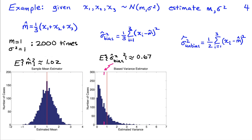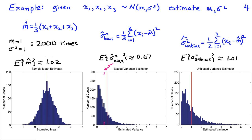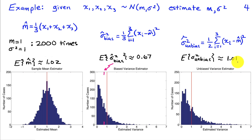The unbiased variance estimator divides by N minus 1 instead of N. With 3 samples, we divide by 2. The resulting histogram shows mass approximately equal on each side of 1, and averaging all 2,000 estimates gives 1.01 — very close to the true value — confirming this is an unbiased estimator.